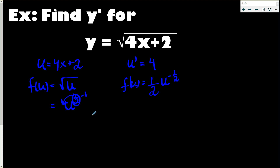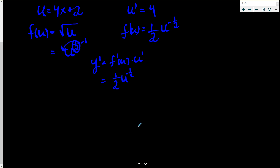There's my f prime of u. Now for the chain rule — f prime of u times u prime — I take one half times u to the negative one half, and multiply by u prime which is 4. I simplify 4 times one half to get 2. Then I substitute 4x plus 2 back in for u, giving me 2 times (4x plus 2) to the negative one half.